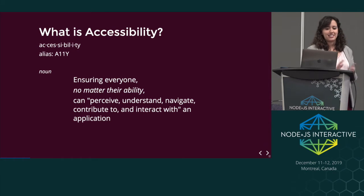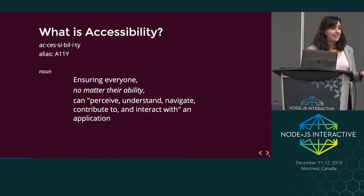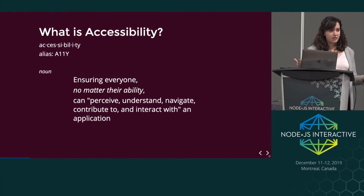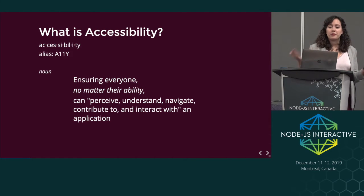For those of you who didn't raise your hand, I want to make sure we're all on the same page about what accessibility entails. The way I like to describe it is ensuring everyone, no matter their ability, can perceive, understand, navigate, contribute to, and interact with an application — basically, anything one person can do, another person can do. It's also commonly referred to as A11Y, because accessibility is a hard word to spell — there are 11 letters between the A and the Y.